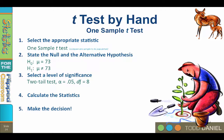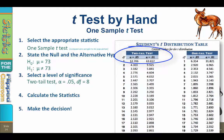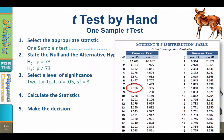To find the critical value, we go to the Student's t-distribution table. We are using a two-tailed test, so we focus on the columns on the left. With alpha equals 0.05 and 8 degrees of freedom, the critical value is positive or negative 2.306.